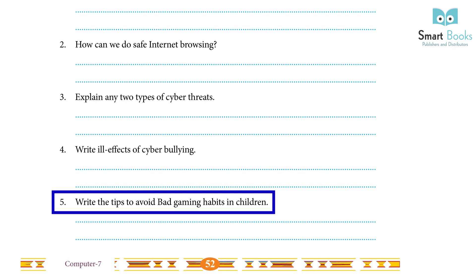5. Tips to avoid bad gaming habits in children: 1. Playing outdoor games with friends. 2. Taking a family trip to historical or cultural sites. 3. Putting yourself on a regular digital detox. 4. Enhancing emotional intelligence and self-awareness. 5. Engaging in charitable work or volunteering activities.